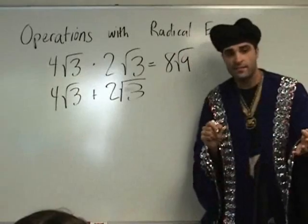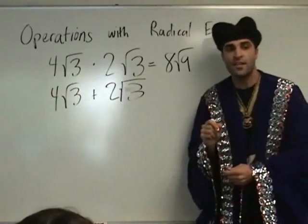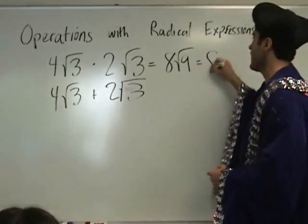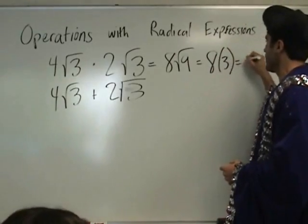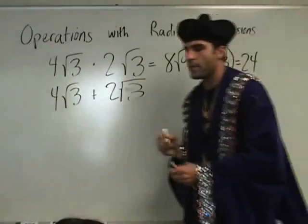Square root of nine, which is? Three. Three. So it's eight times three, which is? Twenty-four. Twenty-four. So it's eight times three — twenty-four.